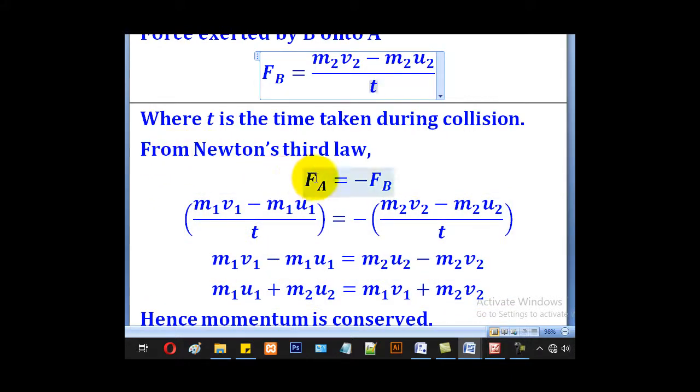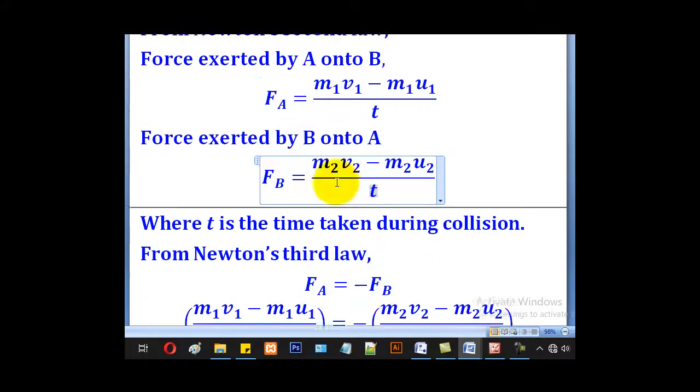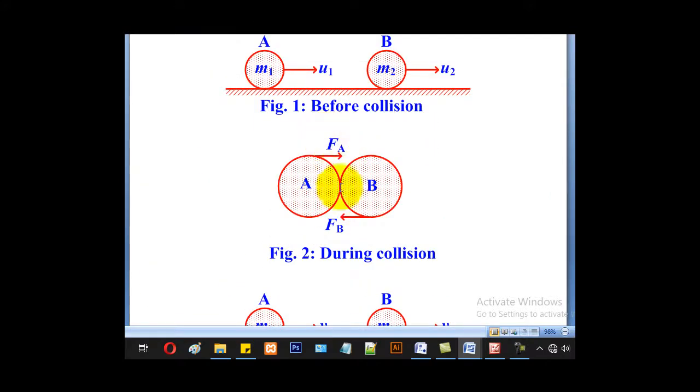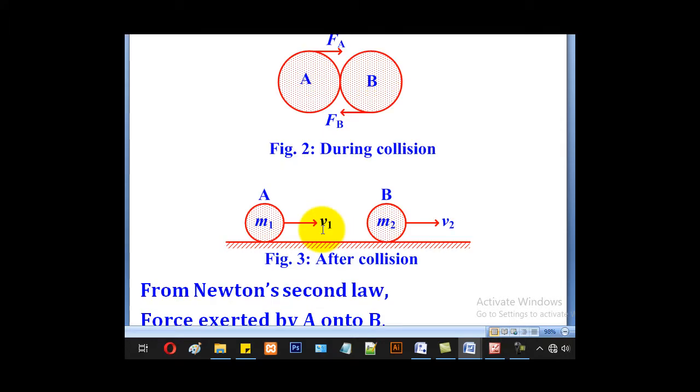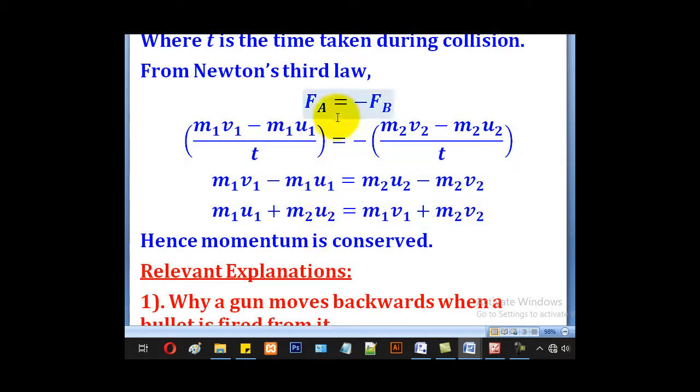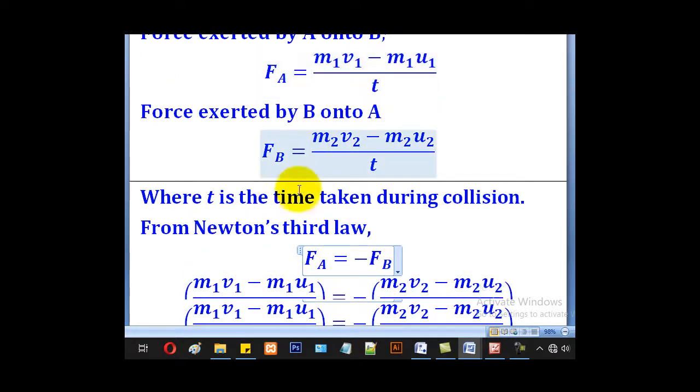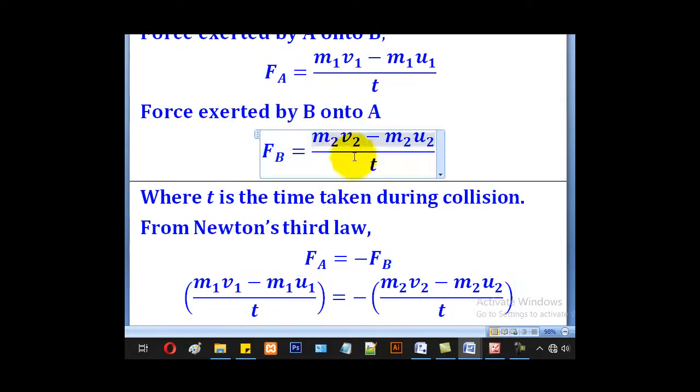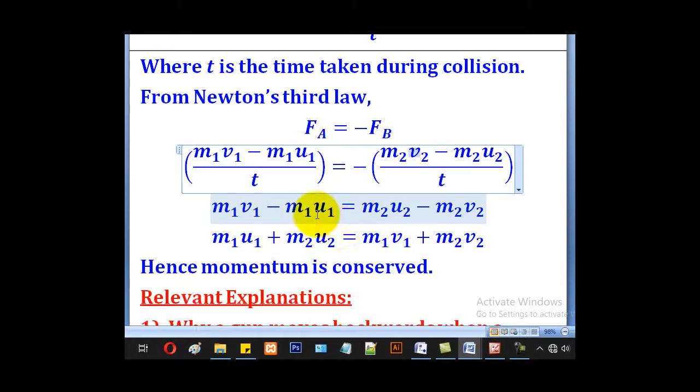And from Newton's third law, action and reaction are equal and opposite, so these forces will be equal and opposite. Remember, the change in direction is known by a change in sign. So if this is positive, this will be negative. And that's what we have done here, positive and negative. So substitute your FA, which is this here, and substitute your FB, which is this here. All that you can cross, this T can now cancel, you can see T, T, to cancel that you come up with that.